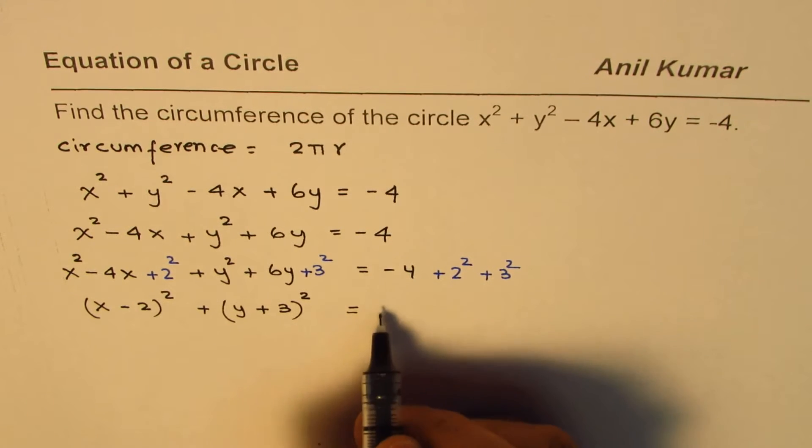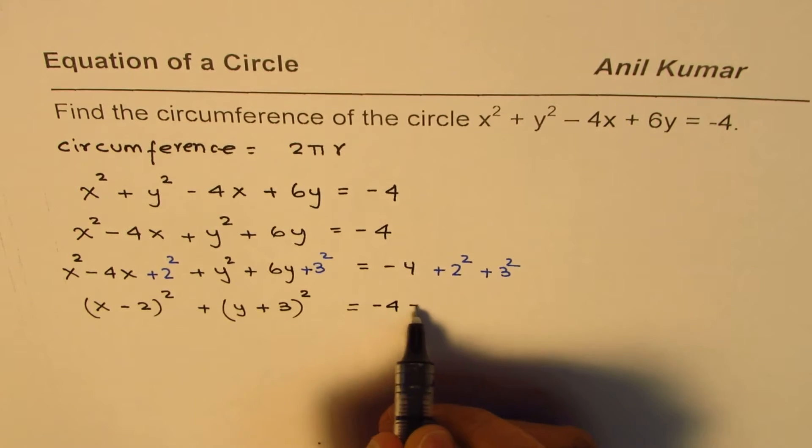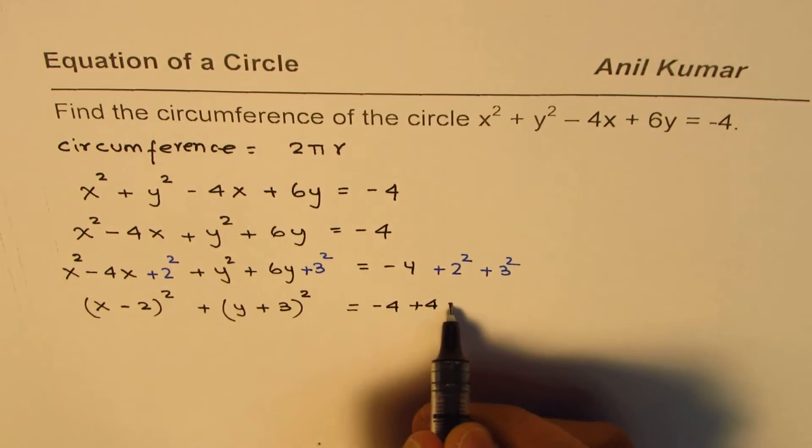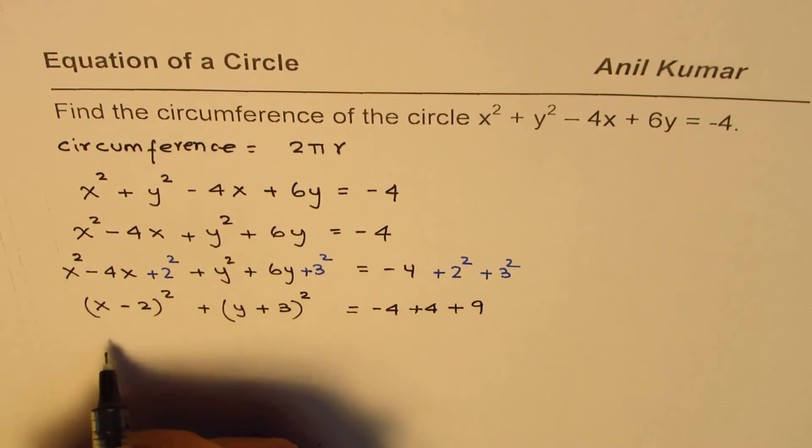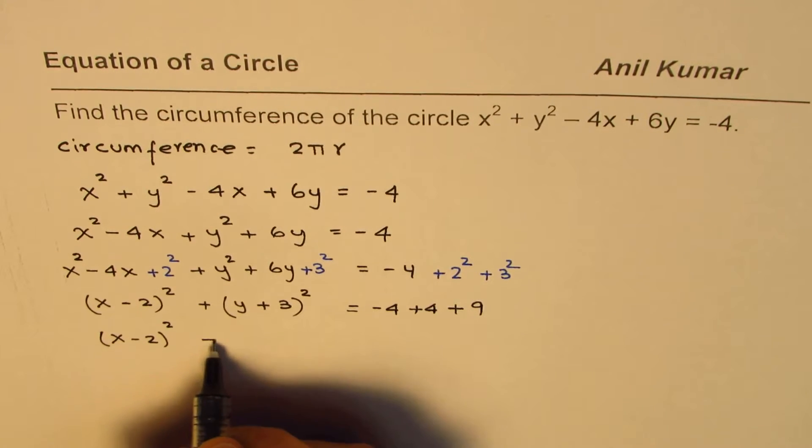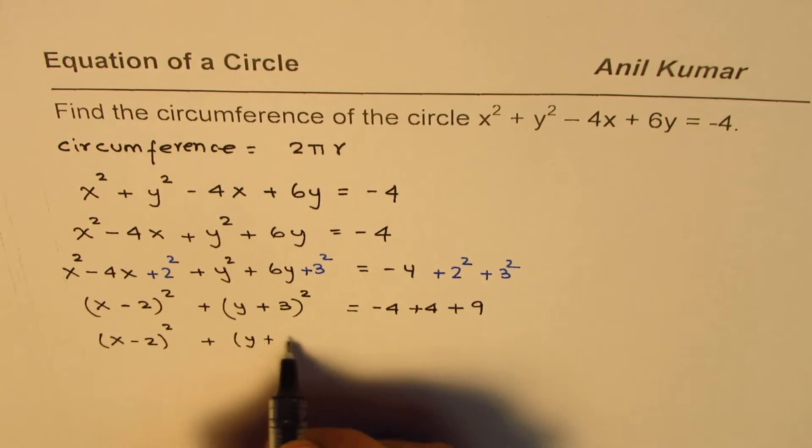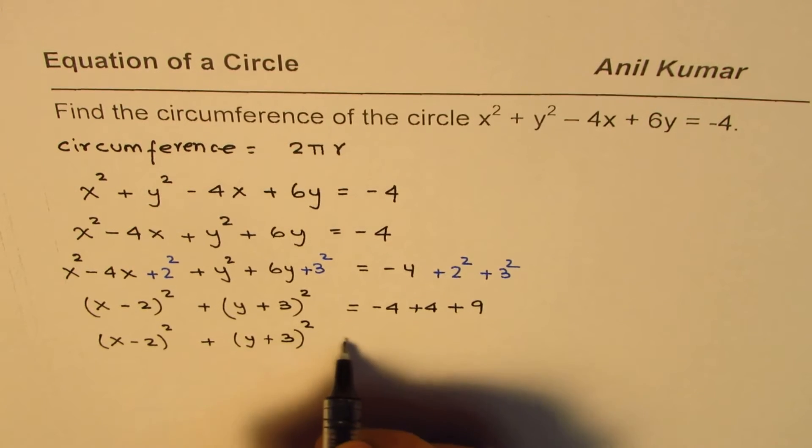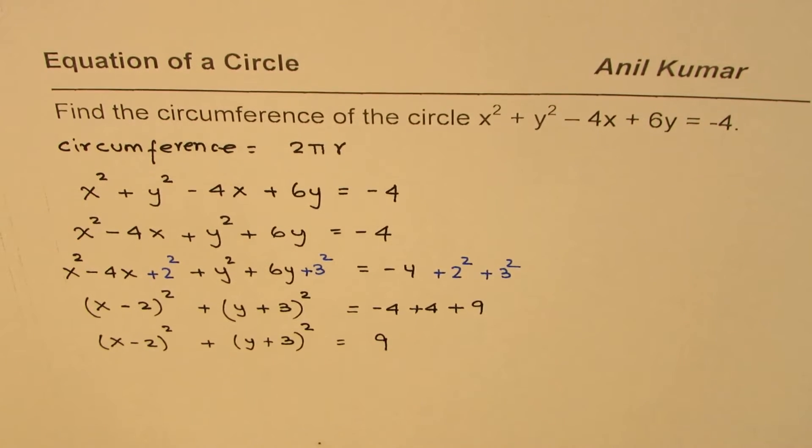So on this side we get minus 4 plus 4 plus 9. So we get an equation of circle which is x minus 2 whole square plus y plus 3 whole square equals to 9.